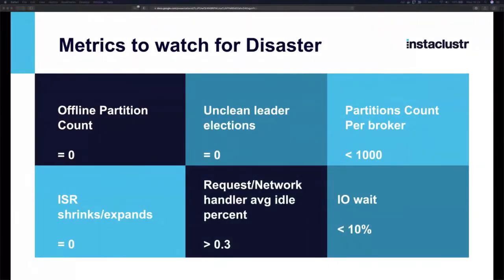Kafka monitors itself extensively and exposes many metrics. The first key one is the offline partition count — partitions whose leader is unavailable. Ideally this should be zero at all times. If it deviates from zero for any sustained period, there's a real problem that needs to be addressed.